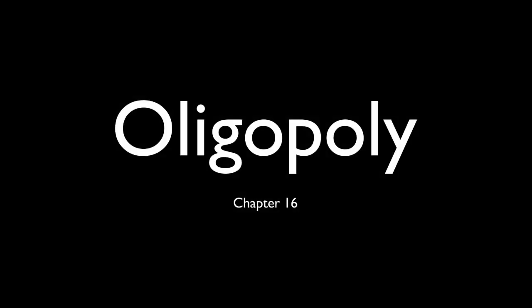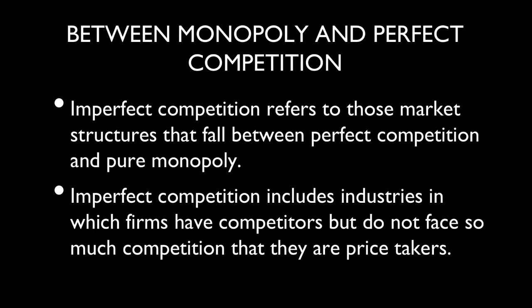Today's screen recording is going to look at my favorite market structure, which is oligopoly. Oligopoly is called an imperfectly competitive market, or imperfect competition. What we mean by imperfect competition are the market structures that fall somewhere between perfect competition and monopoly — pure monopoly.